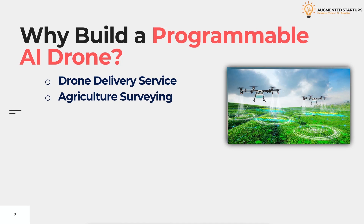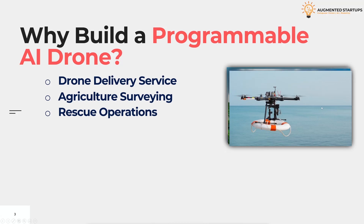We can also use drones for agriculture surveying. If you have a large field of crops, it can be quite labor intensive to survey your entire crop. This is where drones come into play. Not only can they irrigate the soil, but they can also administer safe pesticides and identify plant disease before it spreads. Drones can also be used for firefighting and search and rescue operations.